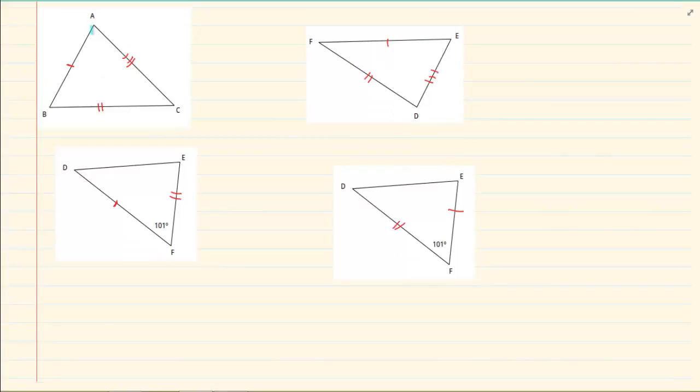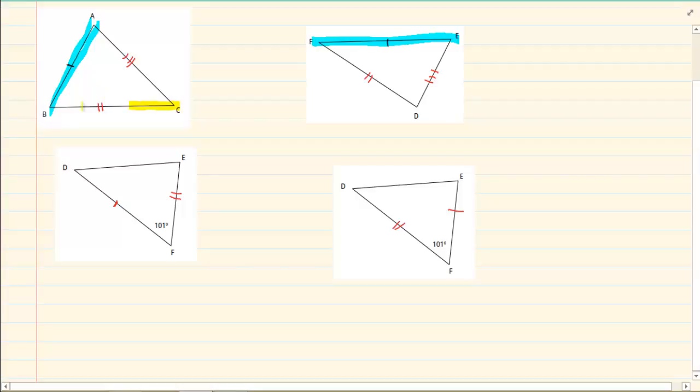In the first one we have where AB is equal to EF, BC is equal to FD, and AC is equal to ED. This congruency is side side side.